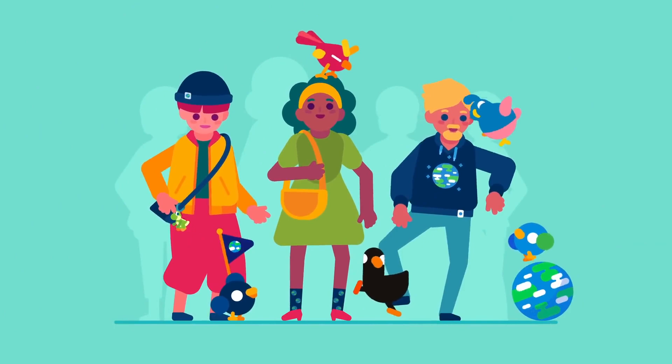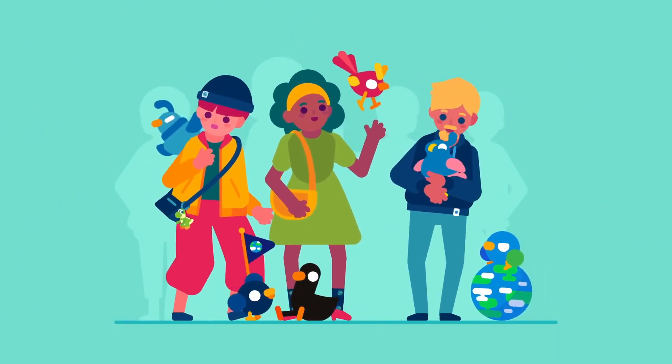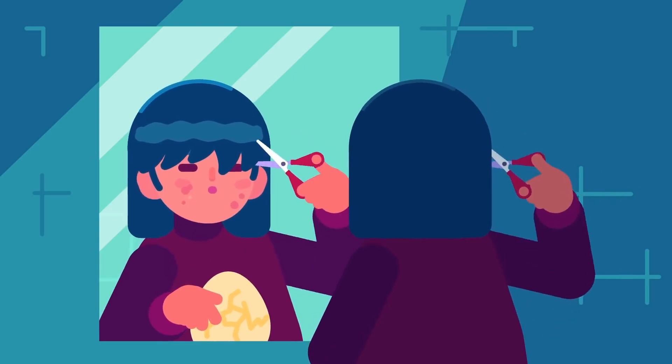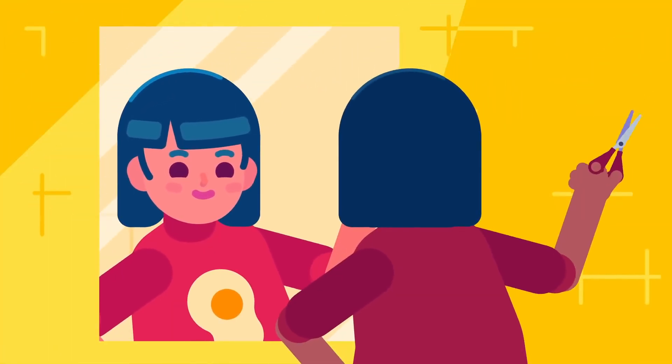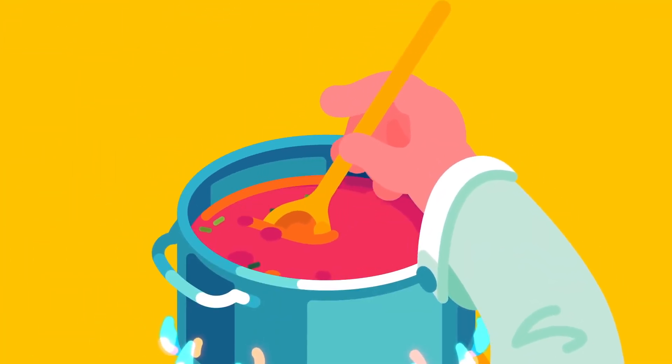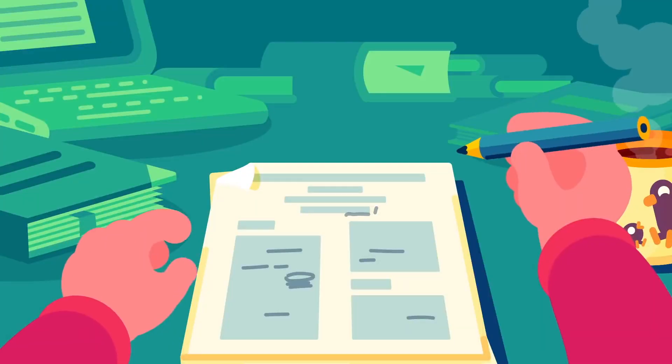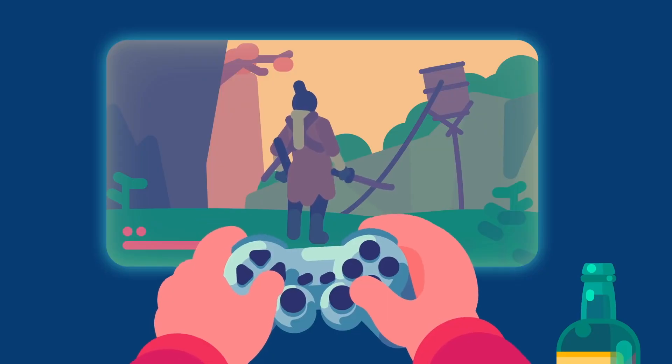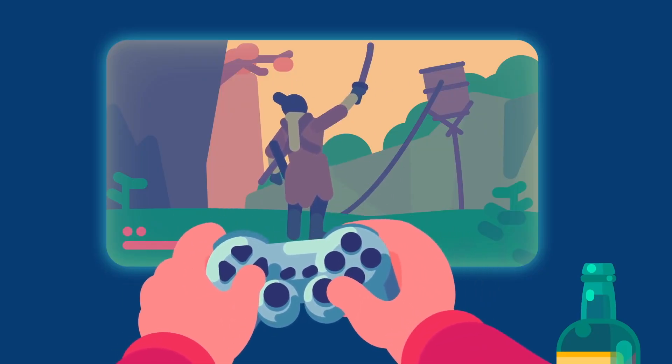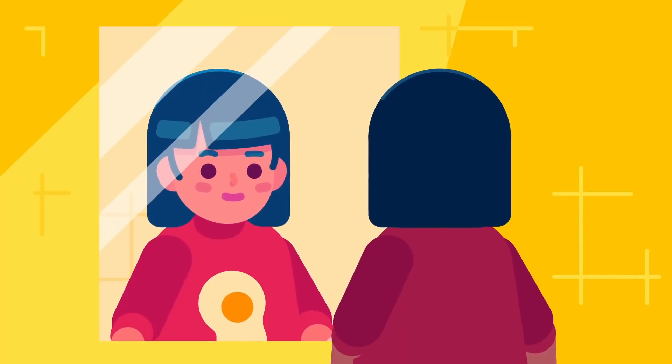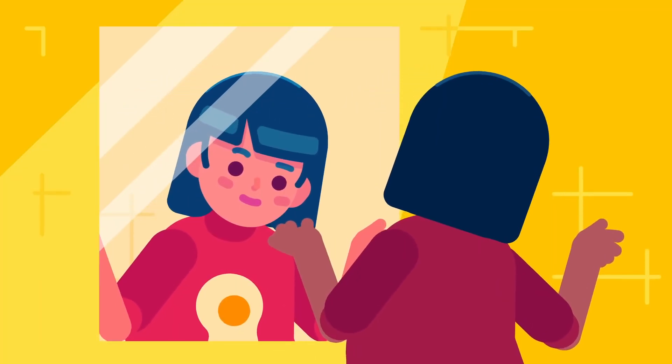The average Kurzgesagt viewer is around 25 years old, which is a pretty good time in the life of most people. The insecurities of the teenage years have begun to recede. Maybe you find yourself in a job or a long-term relationship, maybe you've started a family or are working on an advanced degree, or maybe you feel stuck and don't know where to go yet.